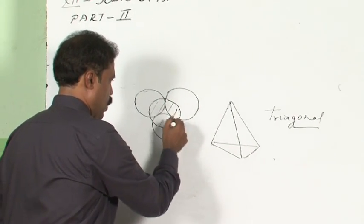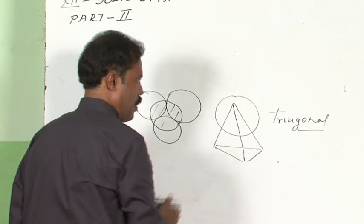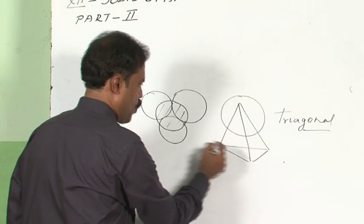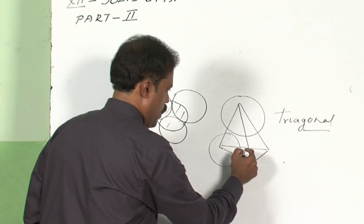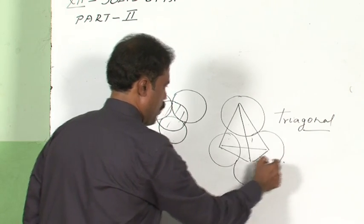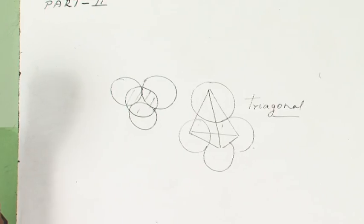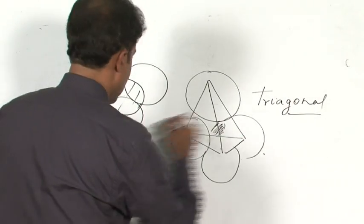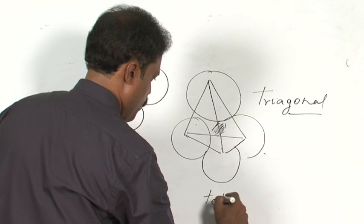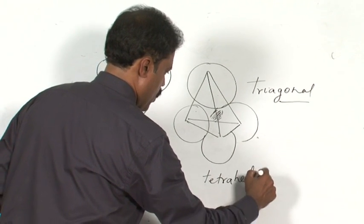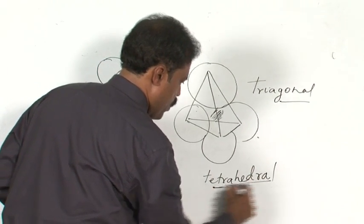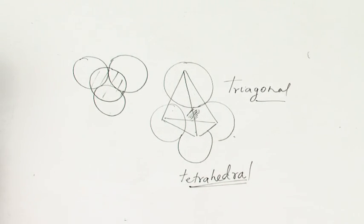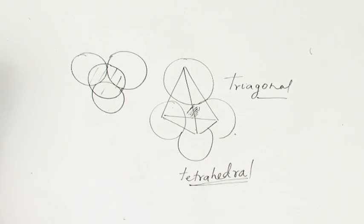The sphere kept on top sits on the void created by the spheres in the first layer. The void created here is called a tetrahedral void. This is one of the kinds of voids created when you arrange particles in a crystal.